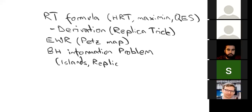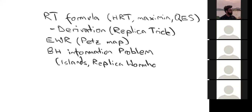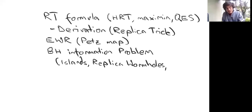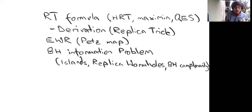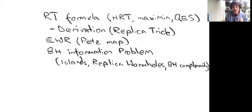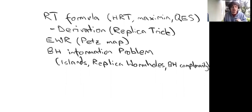Various buzzwords have become associated with this: the idea of islands, replica wormholes — spacetime wormholes connecting different replicas together — and the old idea going back to Lenny Susskind's 90s work on black hole complementarity. Those three buzzwords are just applications of the three bullet points above: islands are what you get when you apply the RT formula to evaporating black holes, replica wormholes are how the replica trick derivation works in that context, and black hole complementarity is really just a special case of entanglement wedge reconstruction for evaporating black holes.